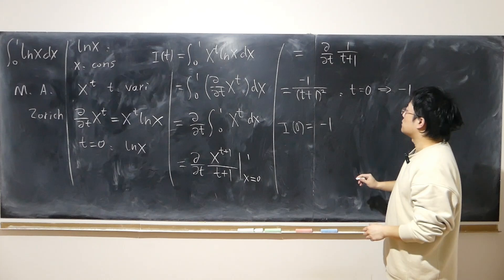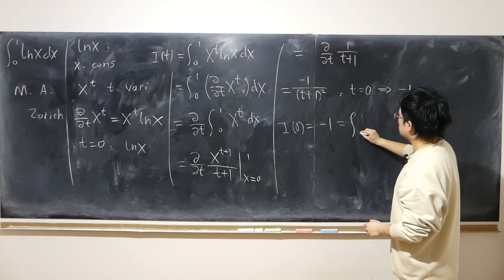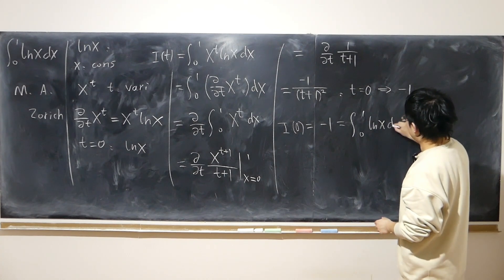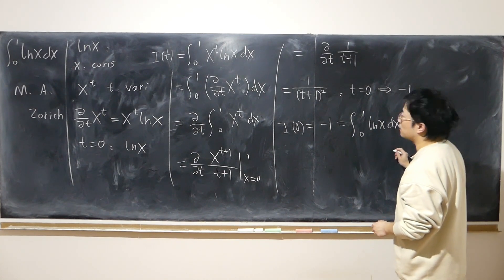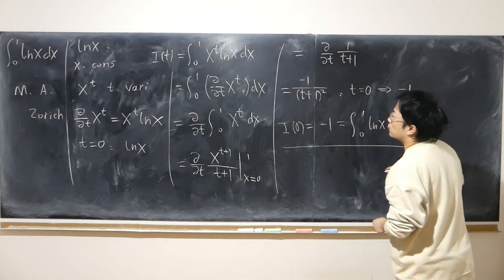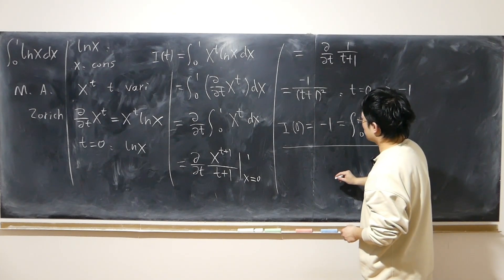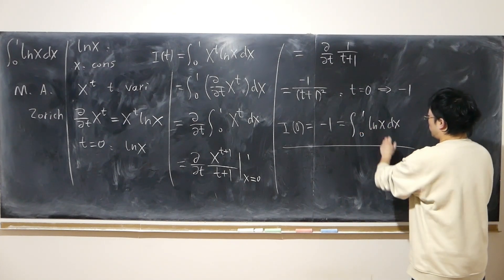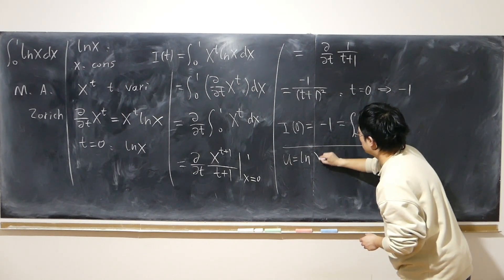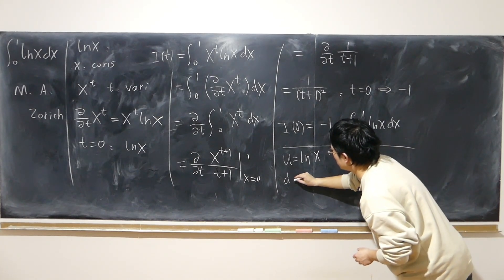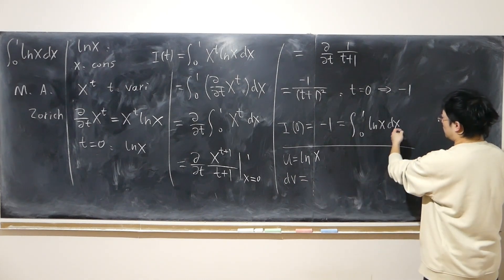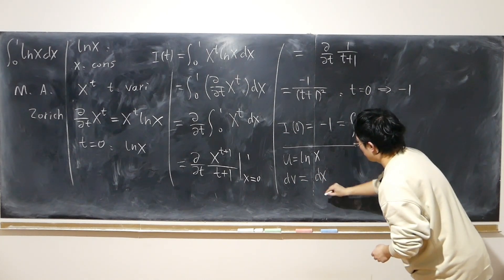So that is the goal integral. And perhaps we can double check that by using integral by parts. I'm sure this is correct, but let's just be safe. So dv, dx.